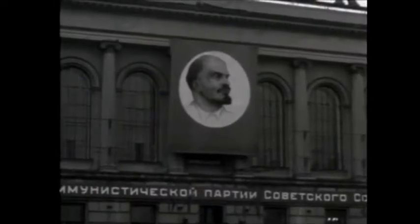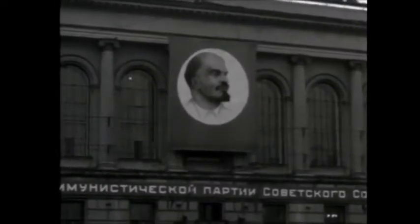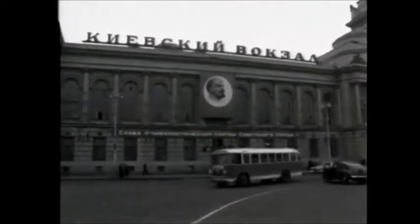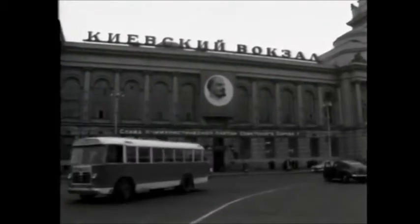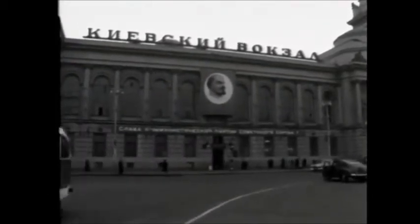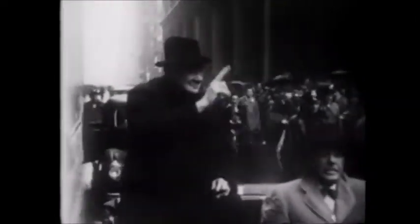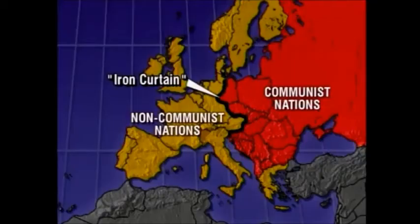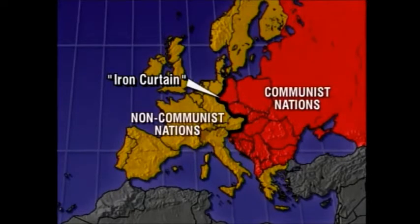Hoping that post-war Europe would develop according to the ideals of democracy and free enterprise, the U.S. greatly feared the spread of communism. In 1946, former British Prime Minister Winston Churchill warned America and the world that Soviet expansion would not stop at what he called the Iron Curtain, an imaginary line that separated the countries in Western Europe from the countries under Soviet domination in Eastern Europe.